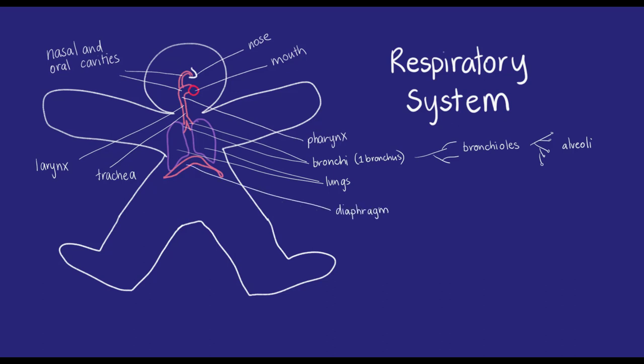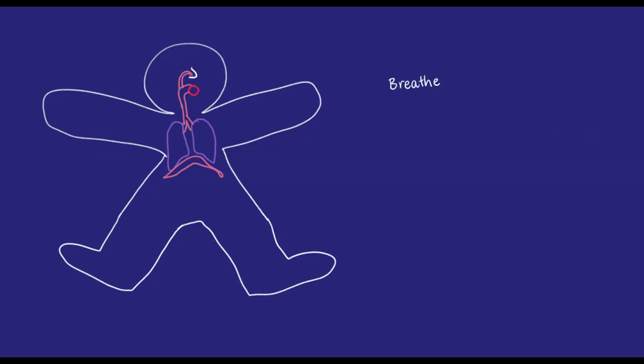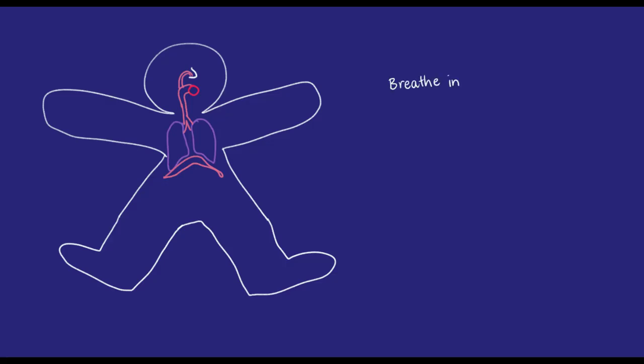Mammals breathe by negative pressure breathing, basically by sucking air in. This is facilitated by the muscles of the thoracic cavity, formed by the rib cage and the diaphragm. They move up, down, and outwards to create a lower pressure in the lungs compared with the atmosphere. Gases flow from high to low pressure areas, so new air is pulled into the lungs.